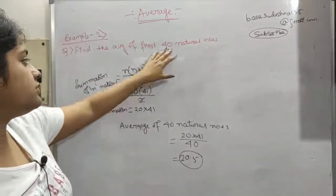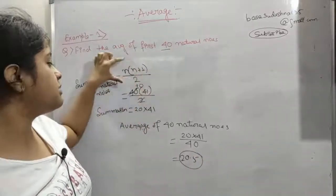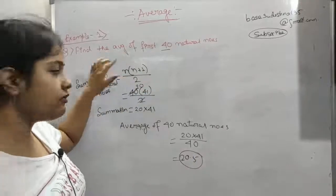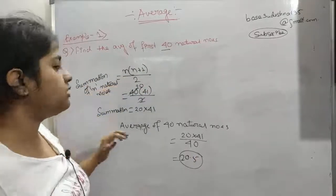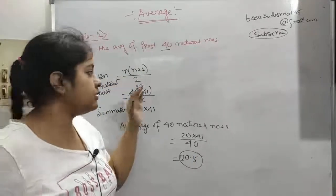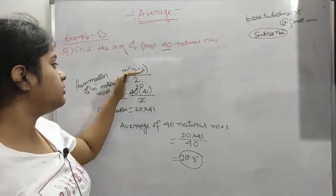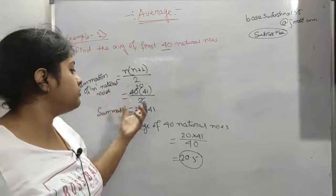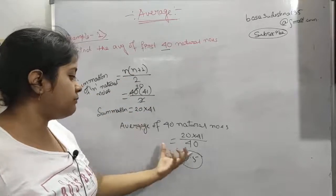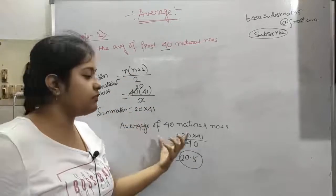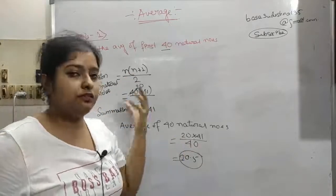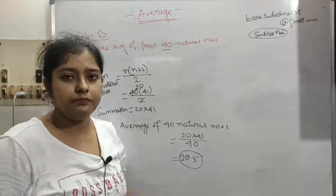I hope you have understood this. For natural numbers this is very easy — we have already seen this while doing algorithms. The formula is n(n+1)/2, then divide by n to find the average, so summation divided by count gives average.